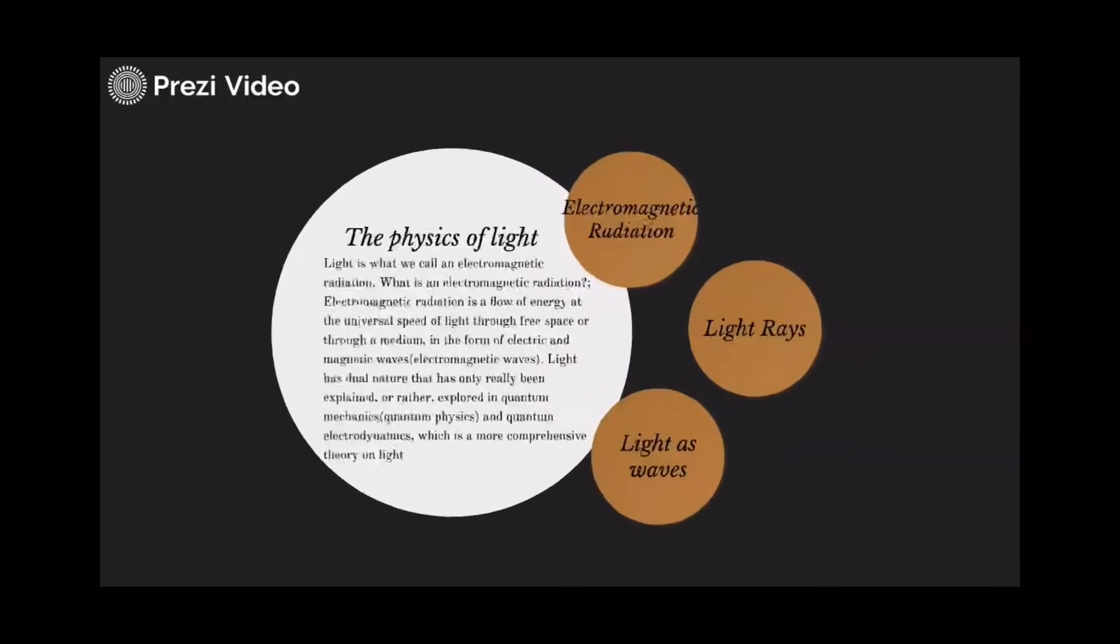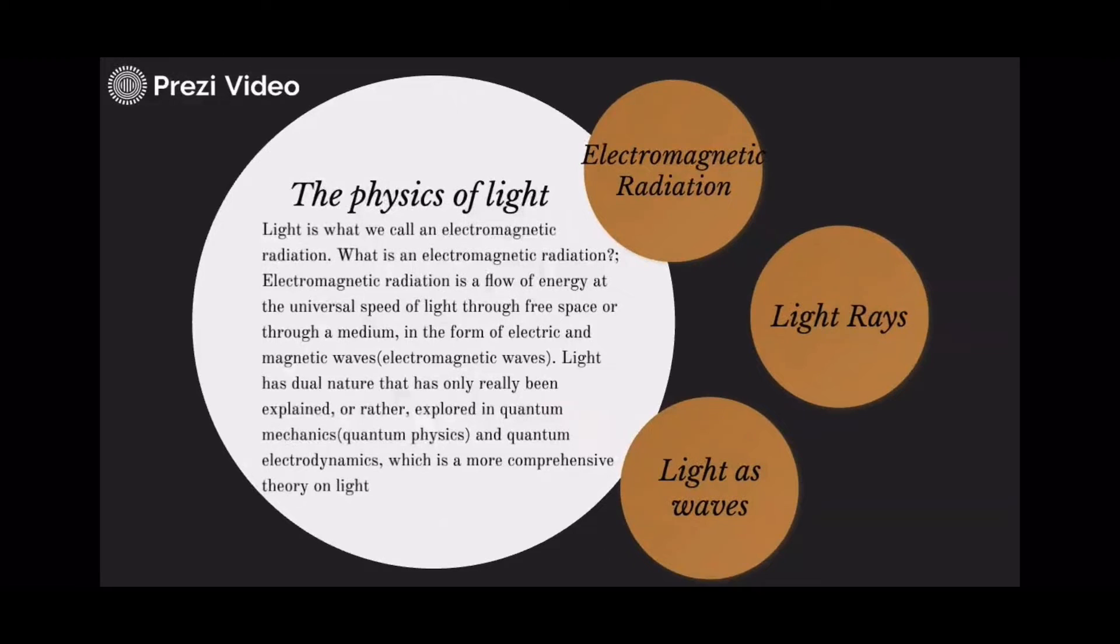The physics of light. Light is what we call an electromagnetic radiation. What is electromagnetic radiation? Electromagnetic radiation is a flow of energy at the universal speed of light through free space or through a medium, in the form of electric and magnetic waves.